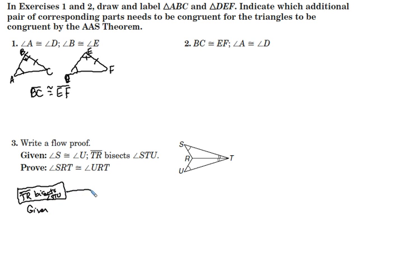And because of that, we know that two congruent angles are formed. Angle STR is congruent to angle UTR. And that is the definition of an angle bisector.